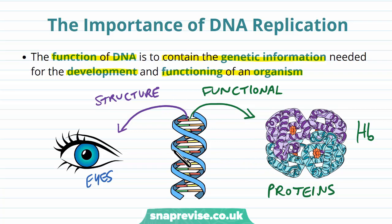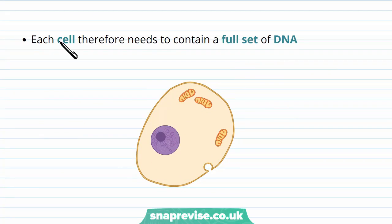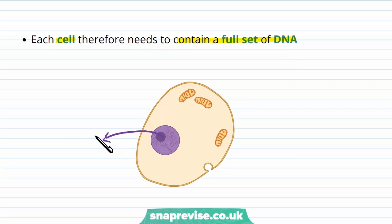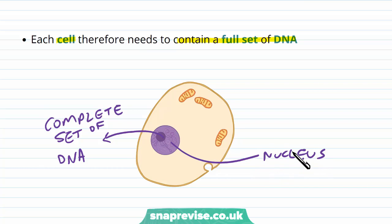DNA is a very important molecule, and the information contained in it must be passed on. Every single cell in the body needs a full set of DNA, so any body cell taken from an organism should have the complete set. This DNA is stored in the nucleus, which is a membrane-bound organelle inside every cell. Eukaryotic cells have a nucleus, whereas prokaryotic cells don't have a nucleus.